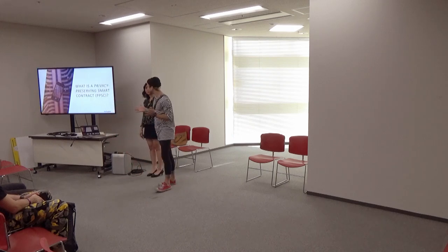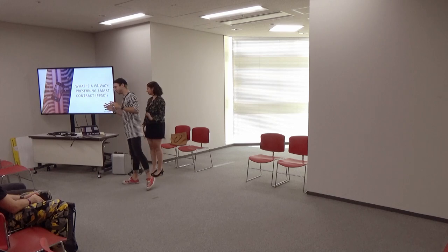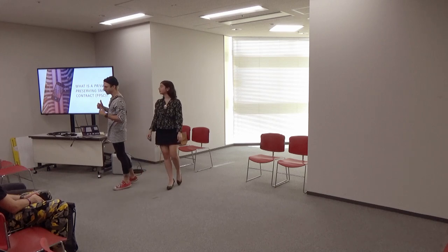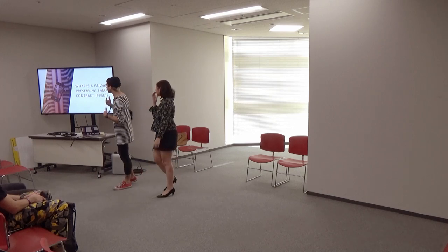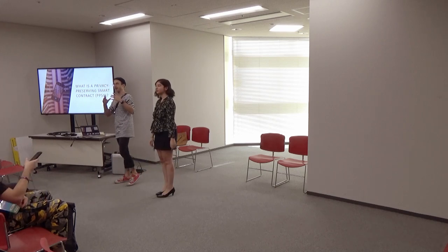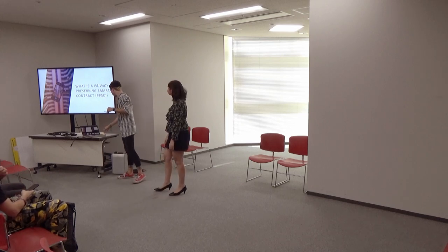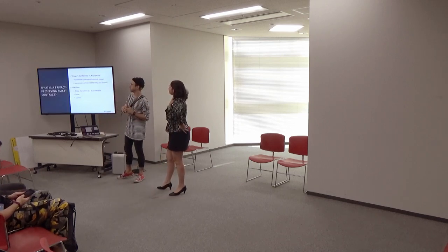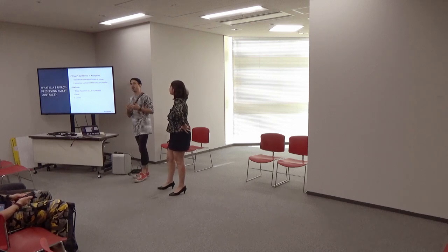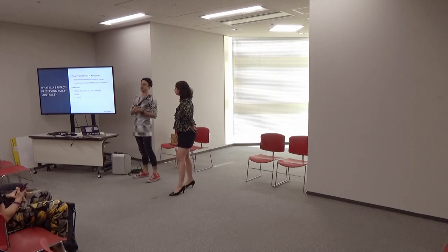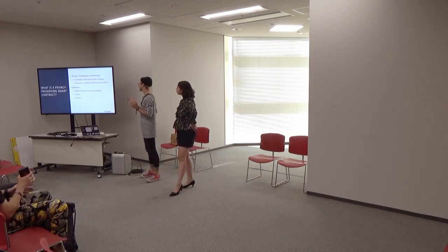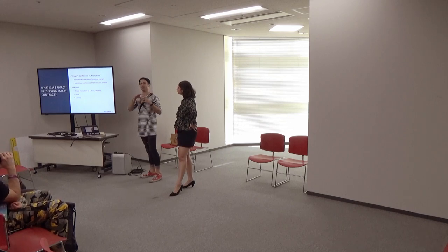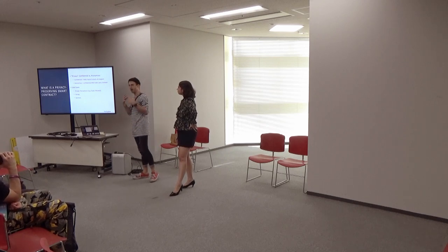What is a privacy-preserving smart contract? There are a few different components and properties of privacy-preserving smart contracts that we're going to go over and exactly what defines them. In our case, privacy is defined by two properties: confidentiality and anonymity. Confidentiality is when we can hide the inputs and the outputs of that state machine's program.